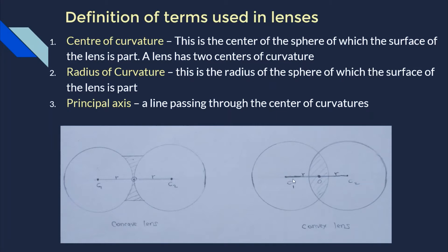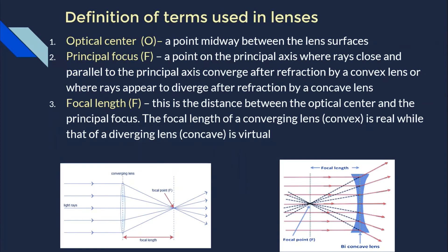The distance between the center of that sphere and the arc of that sphere is what we call the radius of curvature. The next term is the principal axis — a line passing through the centers of curvature. Another term is the optical center: the optical center is simply a point midway between the lens surfaces. This point is the optical center for both the convex lens and the concave lens.